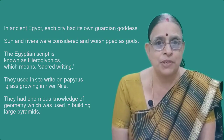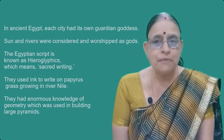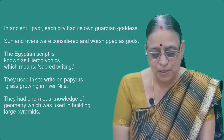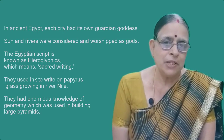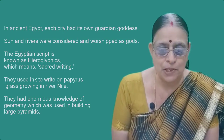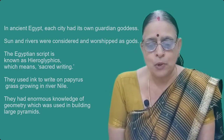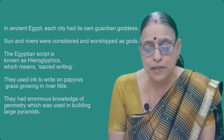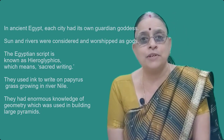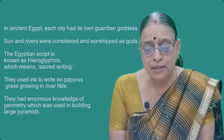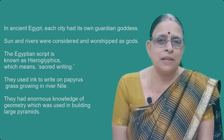Sun and rivers were the objects of worship. Even now today we worship the sun, and this concept is still existing — we also worship rivers. The scripts known by the Egyptians were called hieroglyphics, meaning the sacred writing of the Egyptians. Ancient Egyptians wrote on papyrus — there was a plant called papyrus grass with broad leaves — and they wrote using ink. Thousands of years ago, Egyptians knew the use of ink for writing. Papyrus later came to be known as paper, and now in modern days we use paper for writing. This papyrus tree was growing in plenty on the bank of the river Nile.